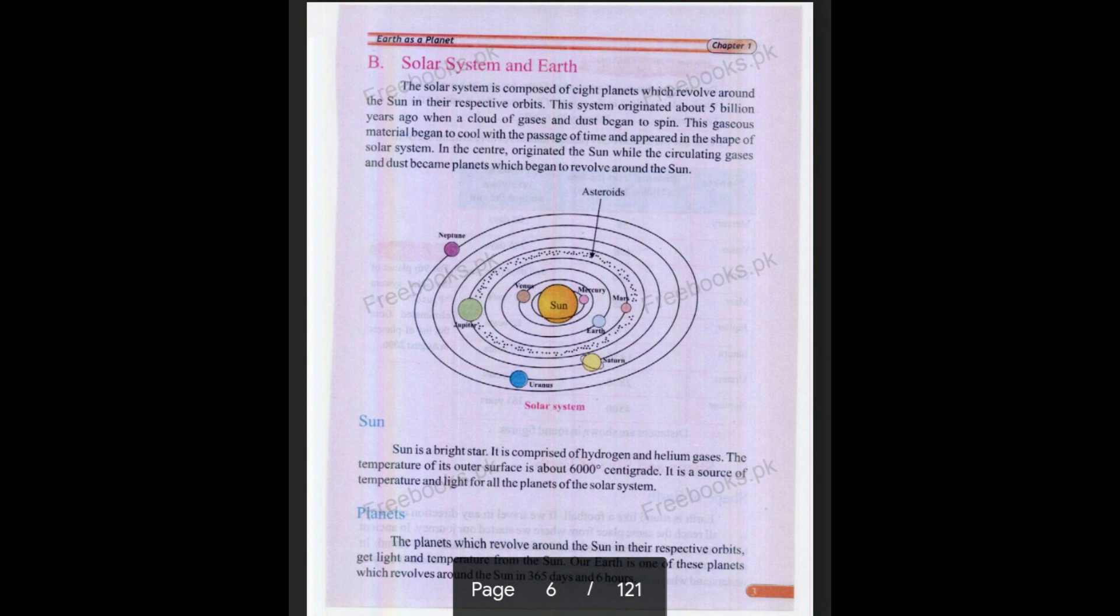Next, we'll talk about the topic of Solar System and Earth. Solar system is the word that is derived from the sun. The sun is at the center and the whole system is revolving around it. The solar system is composed of eight planets which revolve around the sun in their respective orbit. This system originated about five billion years ago.